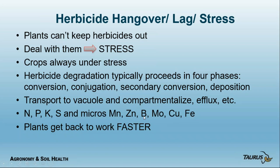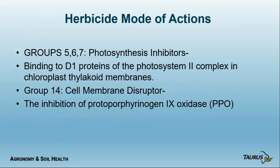Zinc doesn't change its valence but is really important for a whole bunch of things. Boron, as a metalloid, functions mostly in building cell walls. Looking at photosynthesis inhibitors — groups 5, 6, and 7 — and cell membrane disruptors called PPOs. In the chloroplast, photosystem 2 is where photosynthesis starts. There's an electron transport chain that moves ATP, producing ATP and NADPH, then moves over to take in CO2 and make sugar. The group 5, 6, 7 herbicides block the transfer of electrons through plastoquinone, causing stress and superoxides in the chloroplast.